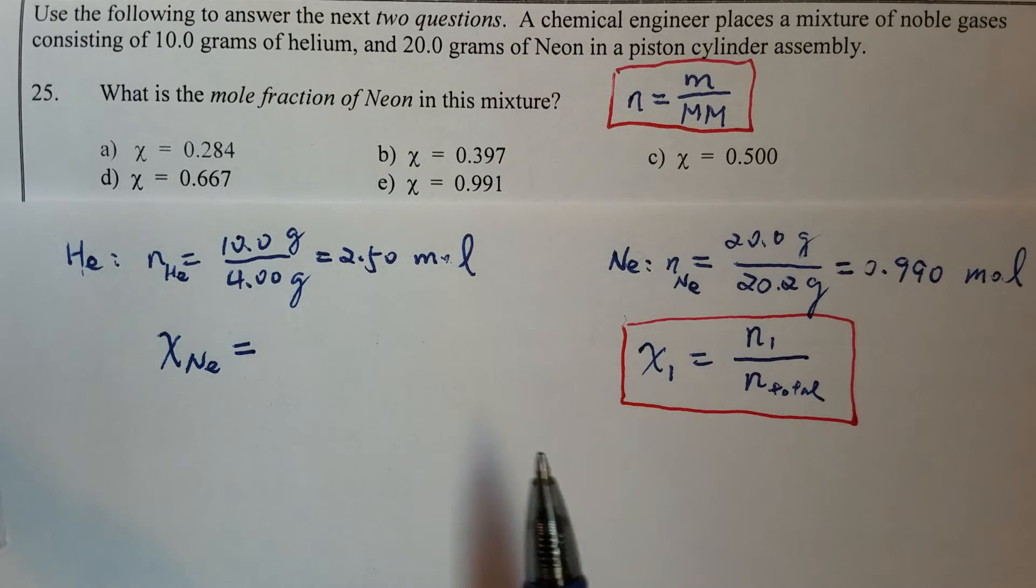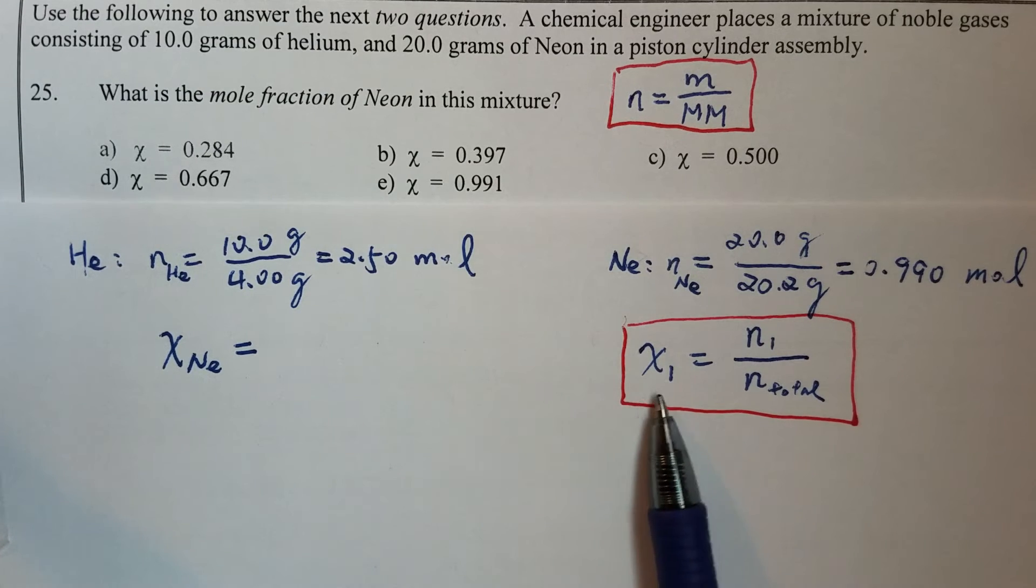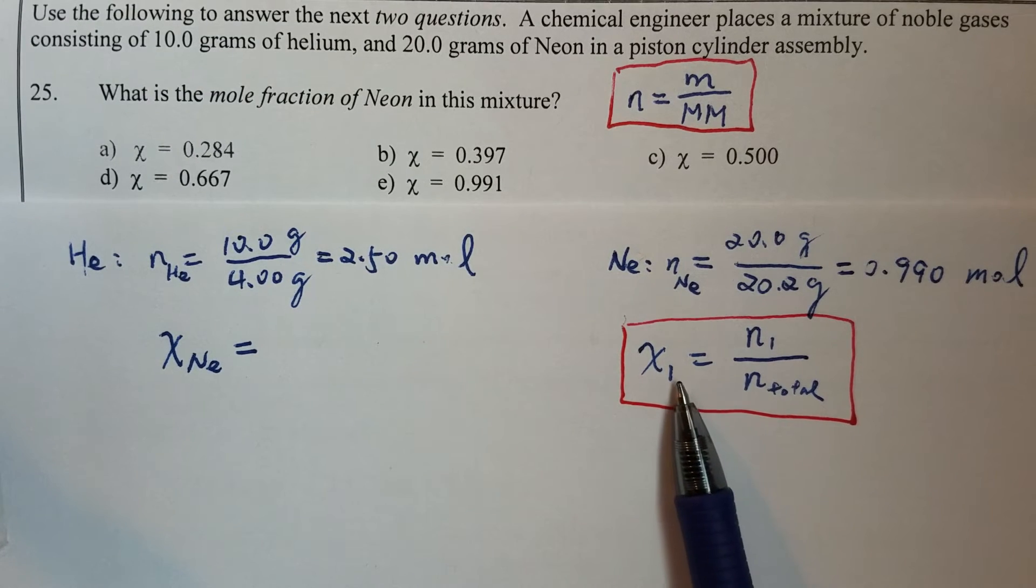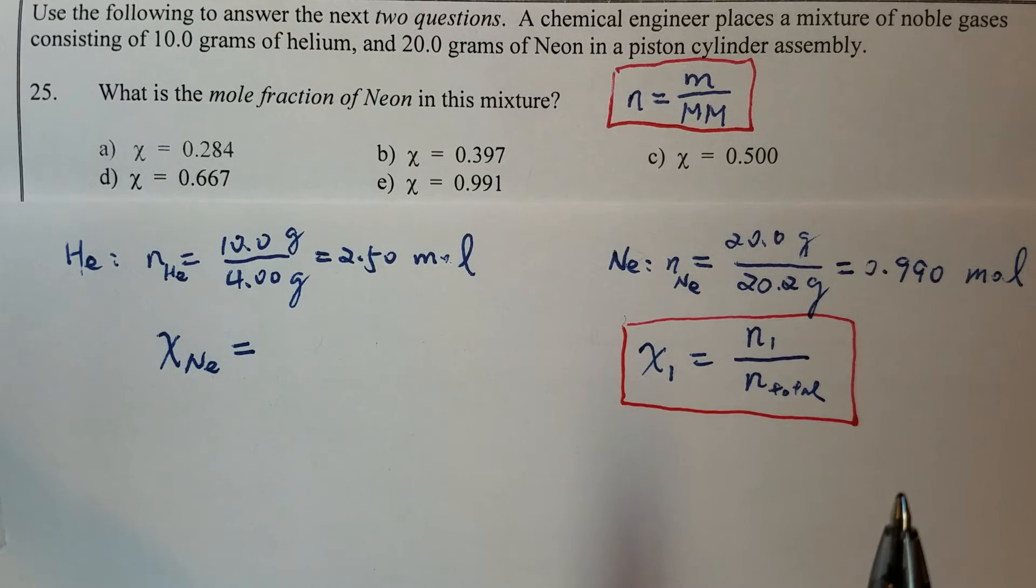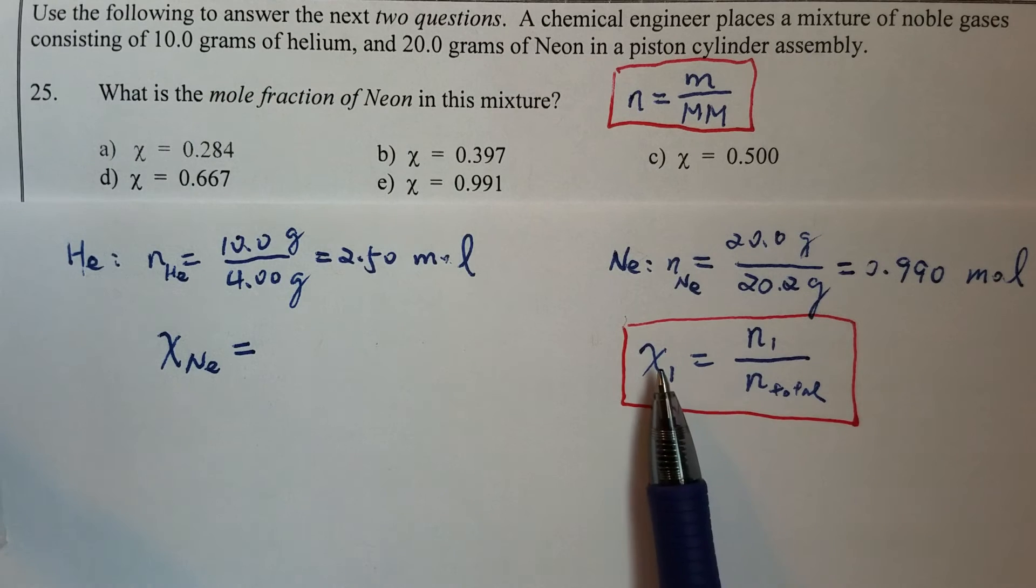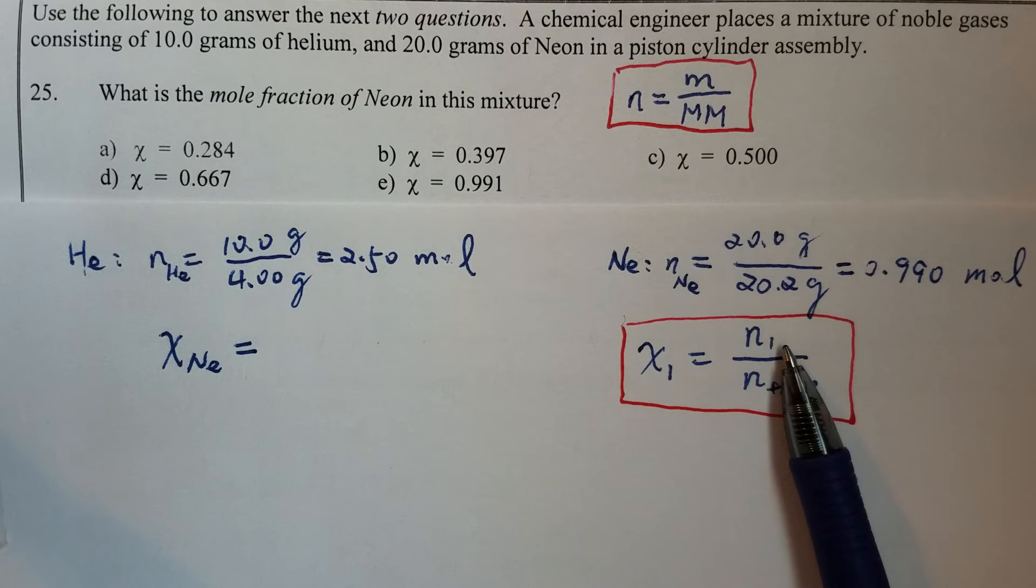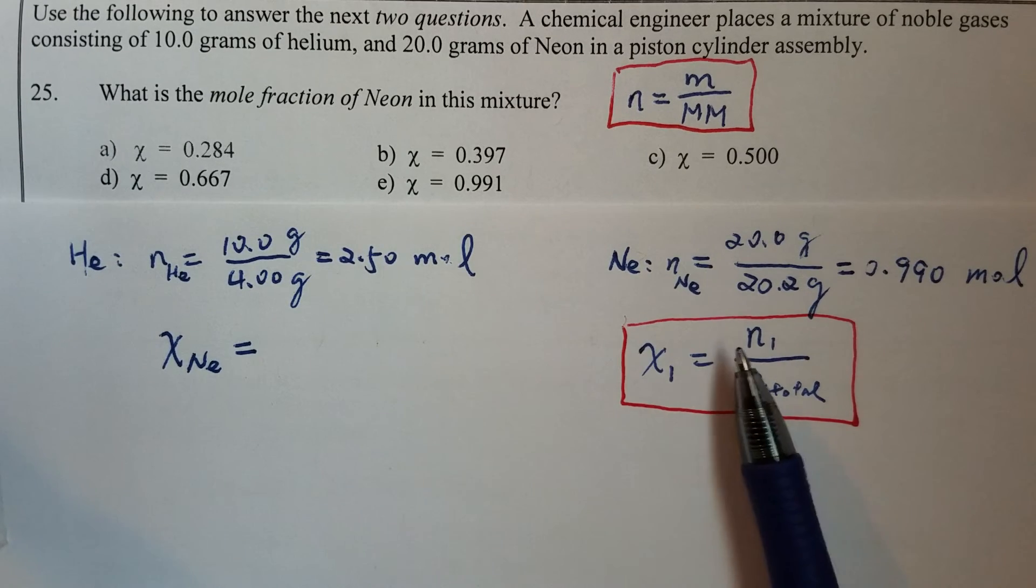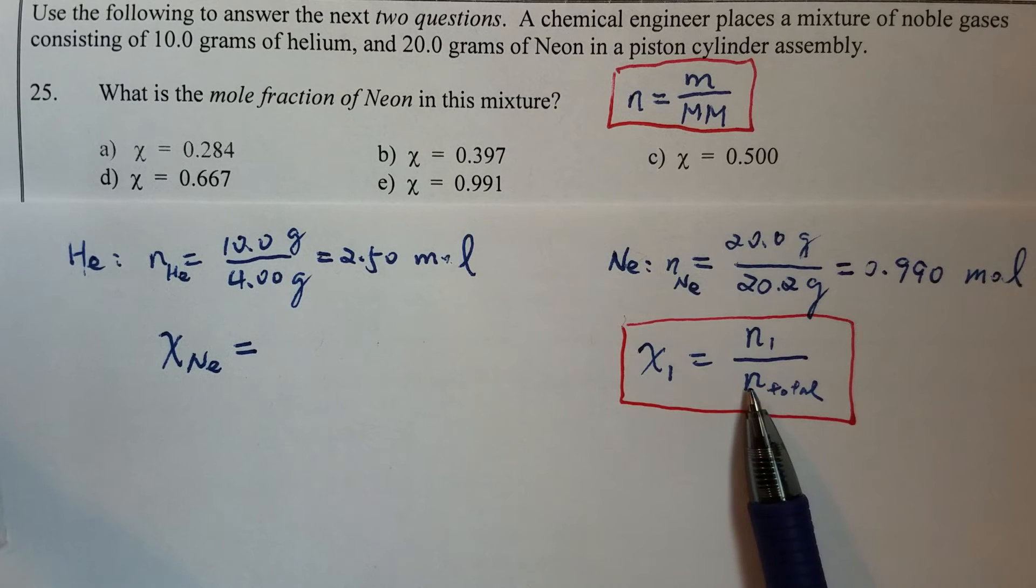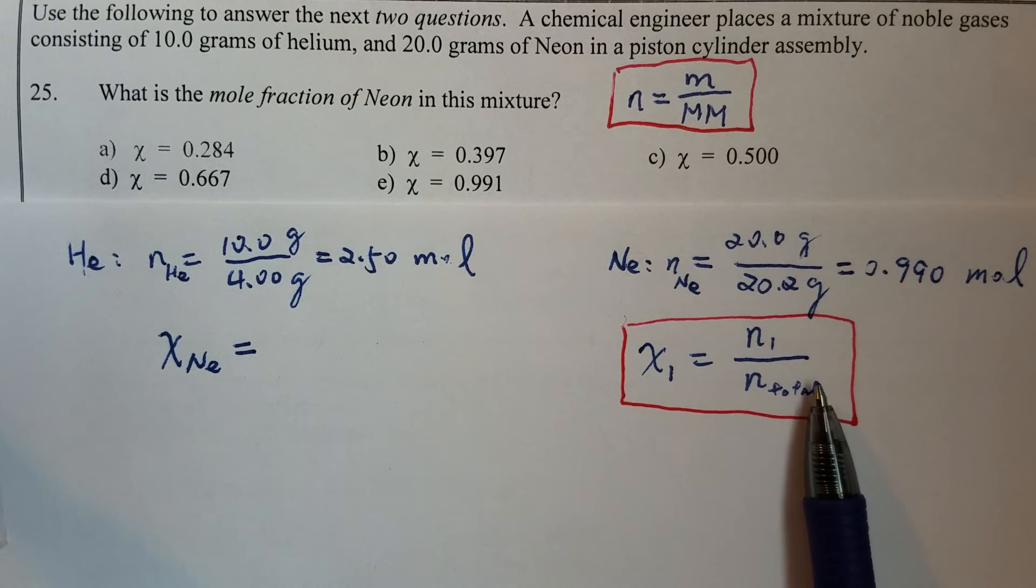Now we are ready to calculate the mole fraction of neon and we can use this equation. The mole fraction of a gas in the mixture can be calculated by the number of moles of that particular gas, in this case neon, divided by the total number of moles of all gases in the mixture.